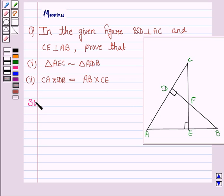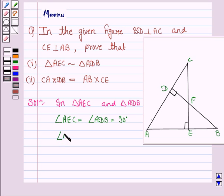Let's now move on to the solution. Now in triangles AEC and ADB, angle AEC is equal to angle ADB because each is 90 degrees, and angle A is equal to angle A because it's a common angle.